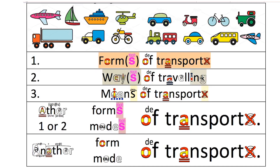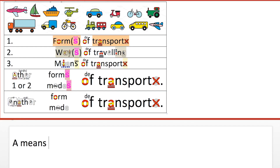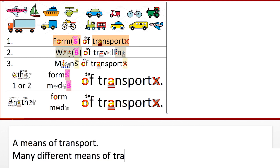There are a few different ways that we speak about public transport. For example, we say 'a form of transport' or 'many forms of transport'. We never put an S on transport — transport is uncountable. An alternative would be 'a way of traveling' or 'ways of traveling'. We wouldn't say 'ways of transport' or 'forms of traveling'. And also 'a means of transport'.